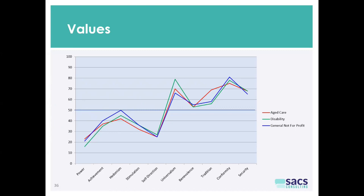Psychometricians will take some really immediate information from this. The first thing is how different these sectors are from population average — the value set of people in the three sectors is very different from population average; it's not your typical employee that goes into any of these sectors. The second thing that hits you in the eye is how similar the sectors are across aged care, disability, and the general not-for-profit sector, which kind of suggests there's a community sector value set.